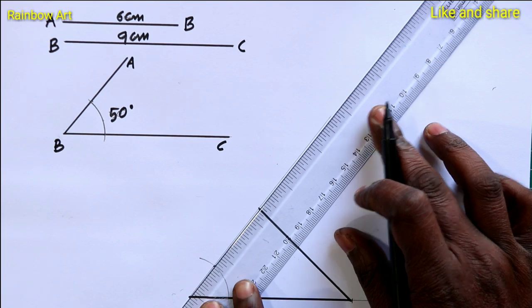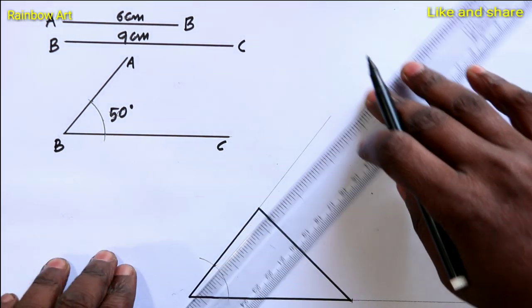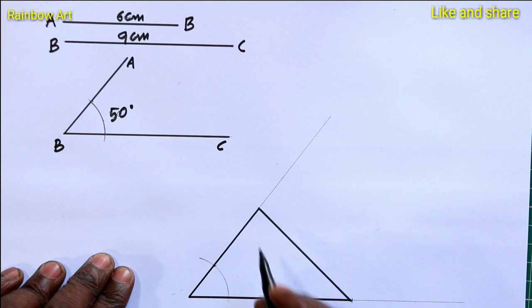You have given one angle. Now, your triangle is. This is A, this is B and C.